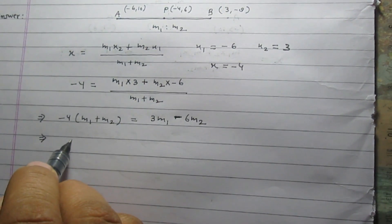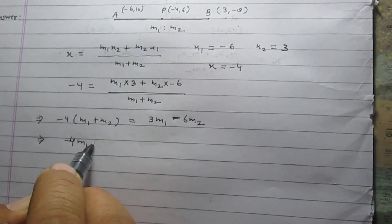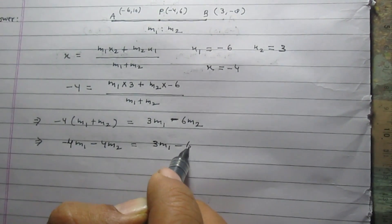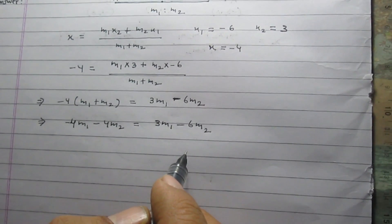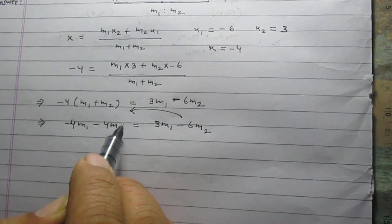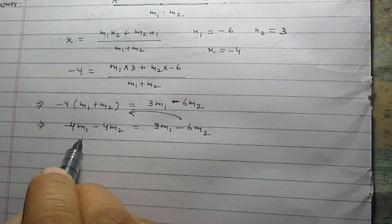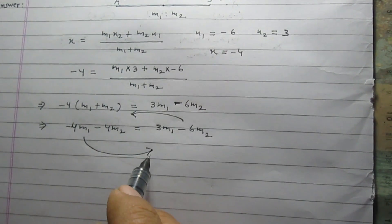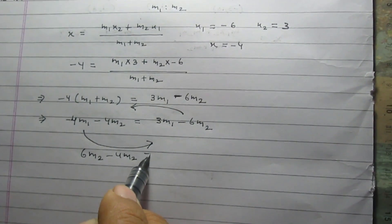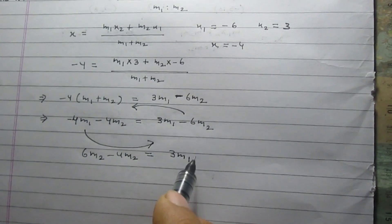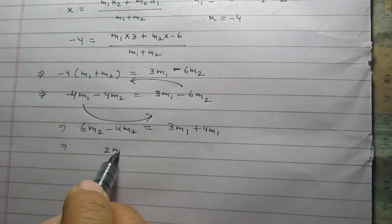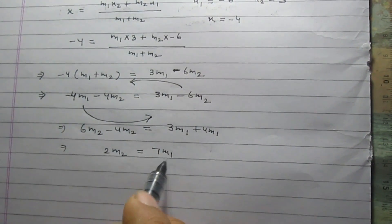Further, we can expand to get minus 4 times M1 minus 4 times M2 is equal to 3 times M1 minus 6 times M2. On transposing minus 6 M2 from the right-hand side to the left-hand side, and minus 4 M1 from the left-hand side to the right-hand side, we get 6 M2 minus 4 M2 is equal to 3 M1 plus 4 M1, which gives us 2 M2 is equal to 7 M1.